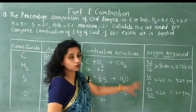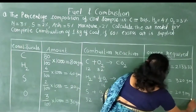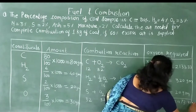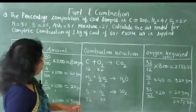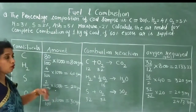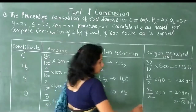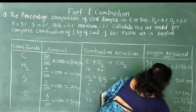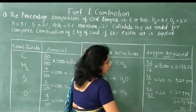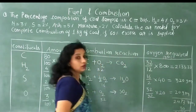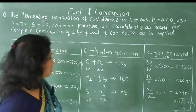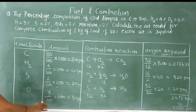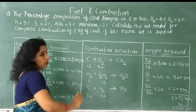Adding all oxygen requirements: 2133.33 + 320 + 20 = 2473.33 g total oxygen required. However, 30 g of oxygen is already present in the coal, so we subtract it: 2473.33 − 30 = 2443.33 g. This is the net oxygen needed. We have now written all constituents, calculated their amounts, written combustion reactions, and found oxygen required.